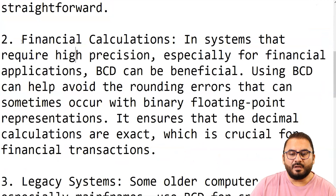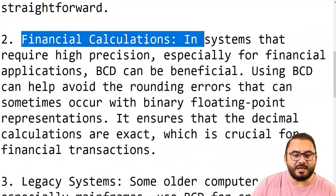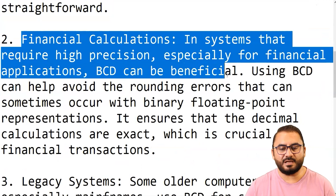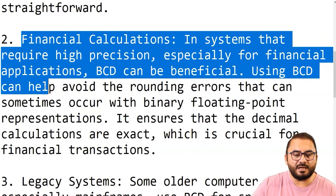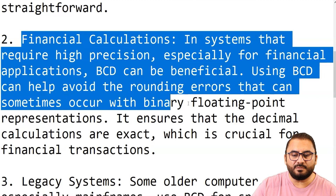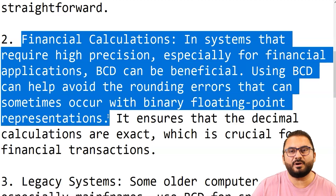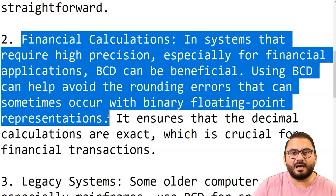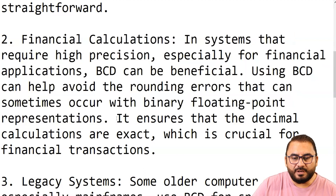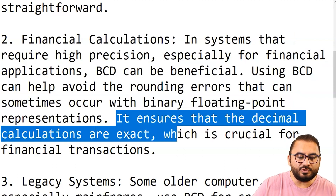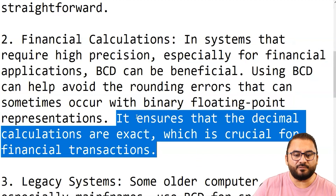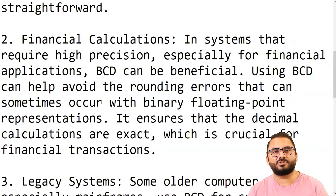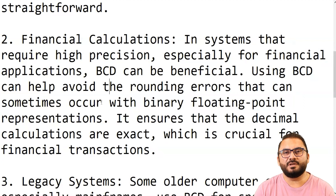Second, financial calculations: in systems requiring high precision, especially for financial applications, BCD can be beneficial. Using BCD helps avoid the rounding errors that can occur with binary floating-point representation — floating-point being the data type for real numbers, which you'll study at A2 level. BCD ensures that decimal calculations are exact, which is crucial for financial transactions where you cannot afford to lose even a fraction of a number.